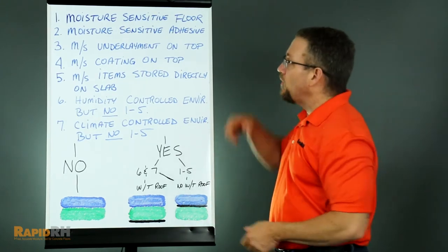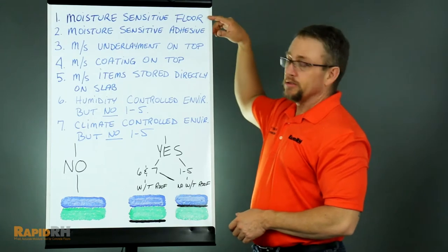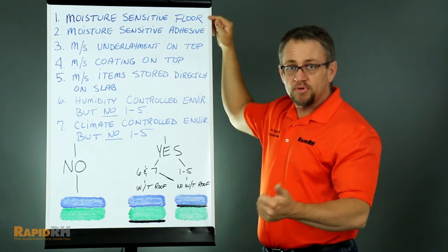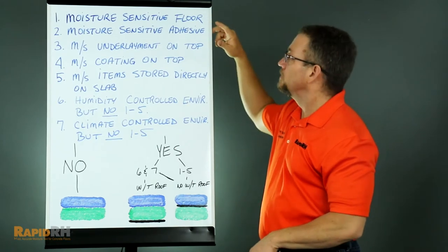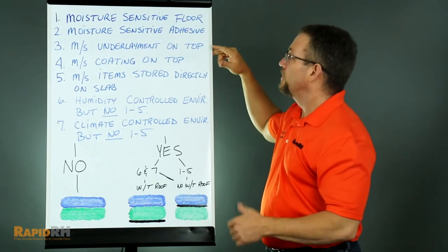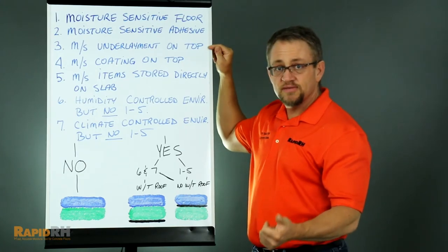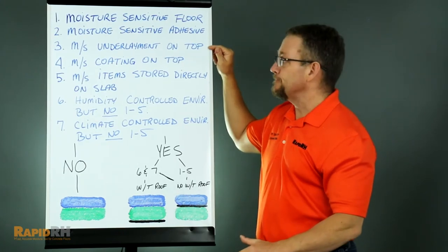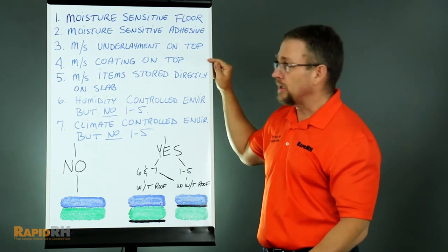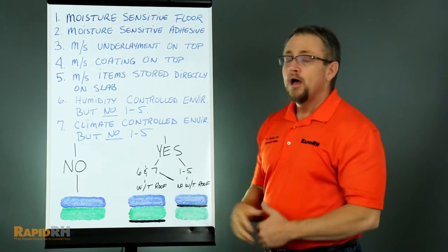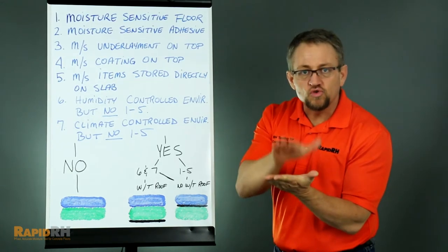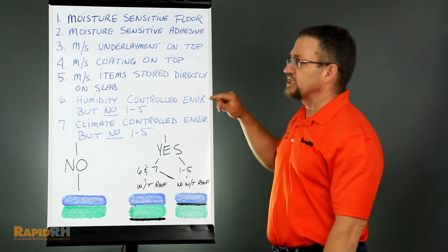So, if you look at the whiteboard, we have question number one: Is there going to be a moisture-sensitive flooring product applied to the surface of the concrete? Two: Is there going to be a moisture-sensitive adhesive used? Three: Is there going to be a moisture-sensitive underlayment on top of that slab? Four: Maybe there's going to be a moisture-sensitive coating on top. Five: Are there going to be moisture-sensitive items that are placed or stored directly on that slab?